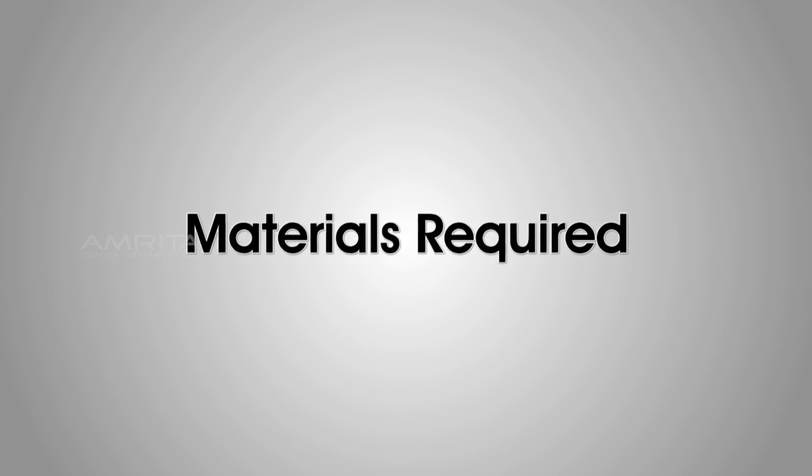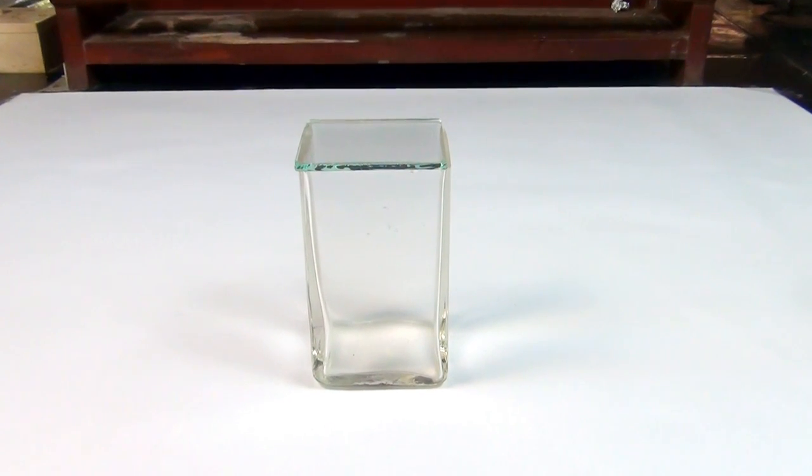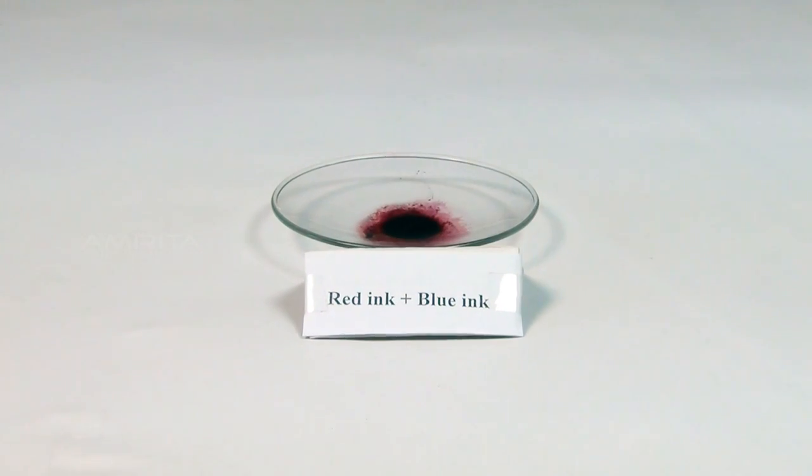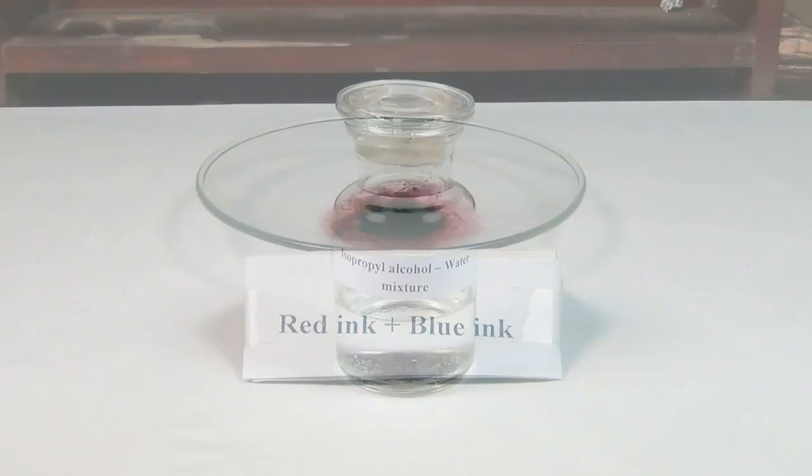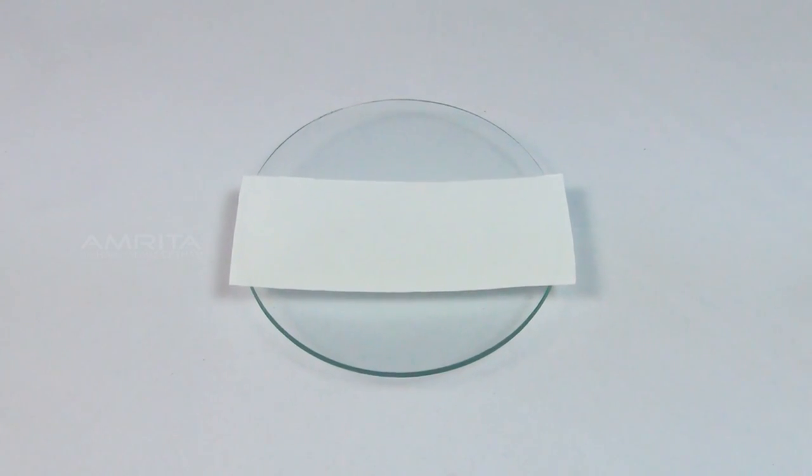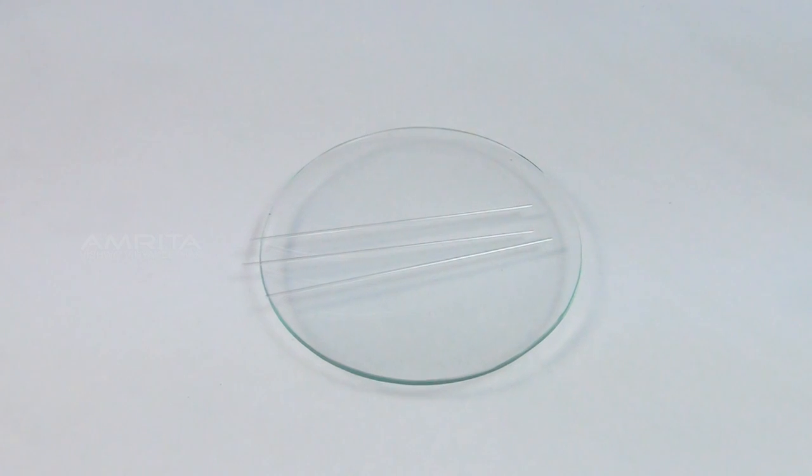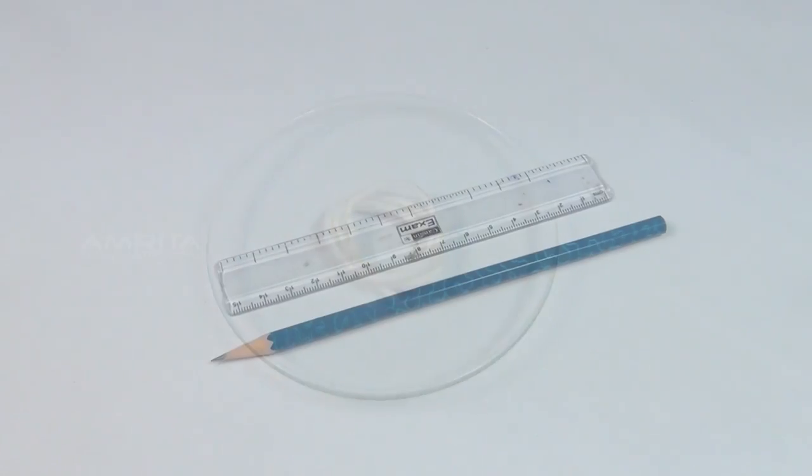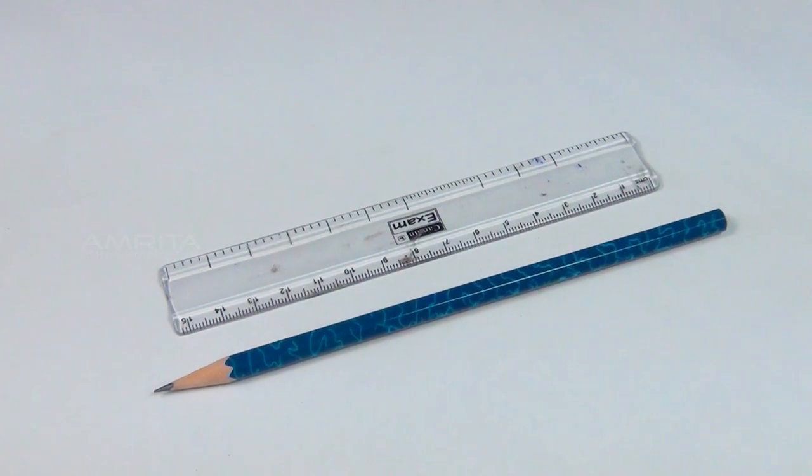Materials Required: chromatography chamber with lid, mixture of red and blue inks, isopropyl alcohol water mixture, Whatman filter paper strip, fine capillary tube, thread, scale and a pencil.